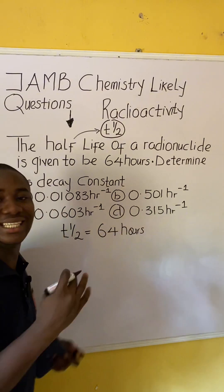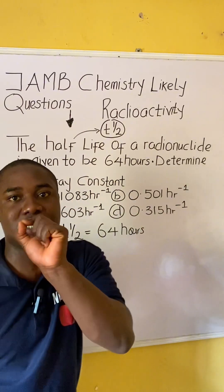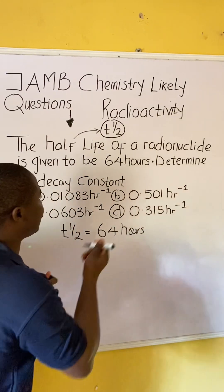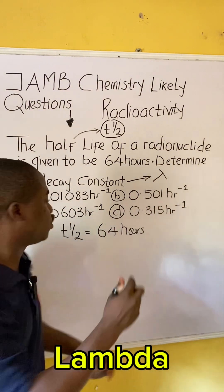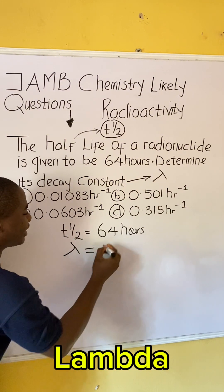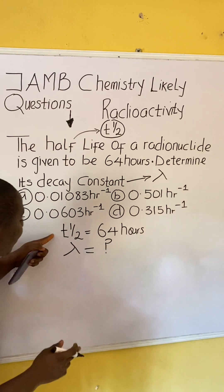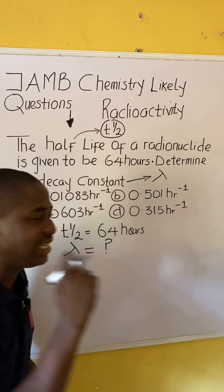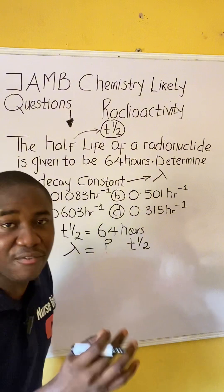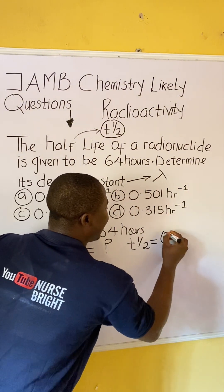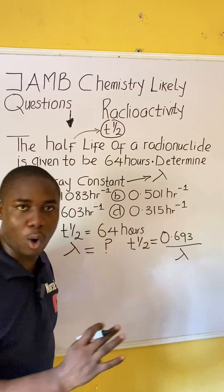The question now says determine its decay constant. It's important to know that decay constant is symbolized as lambda (λ). In the topic of radioactivity, there is a formula that relates half-life and decay constant. That formula is: T½ = 0.693 divided by λ (the decay constant).